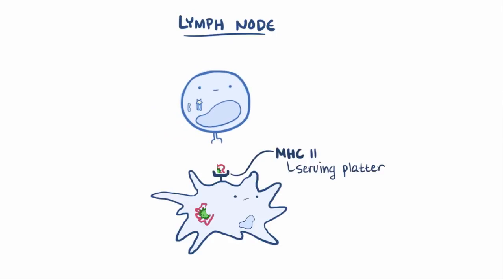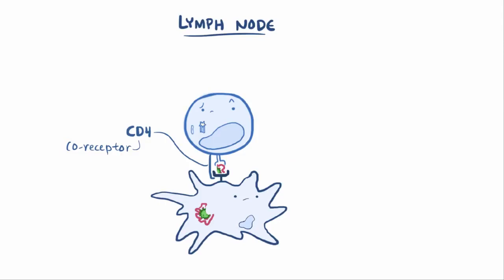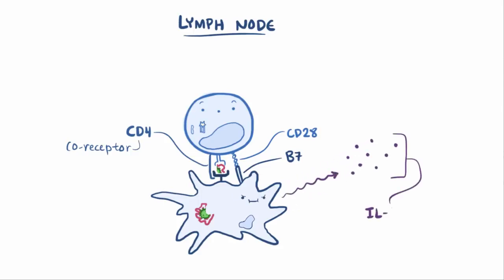If a T helper cell recognizes the antigen, it binds to the MHC class II molecule using its T cell receptor, as well as CD4, which is a co-receptor — and this is why it's called the CD4-positive T cell. The CD4-positive helper T cell will also express a CD28 protein, which will bind to the B7 protein on the surface of the dendritic cell. Once it binds to the T cell receptor and the CD28 protein, the dendritic cell releases interleukin-12, a cytokine that tells the naive CD4-positive T cell to mature and differentiate into a type 1 helper T cell, or TH1 cell — a sort of coming-of-age moment.